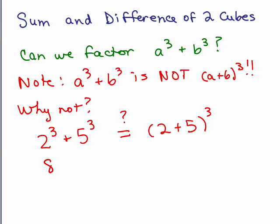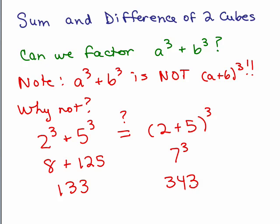2 cubed is 8 and 5 cubed is 125, and that's 133. 7 cubed is 7 times 7 times 7, and that's 343. So if it's not going to work with those numbers, then it's certainly not going to be true. A cubed plus b cubed is simply not the same thing as a plus b in parentheses cubed.